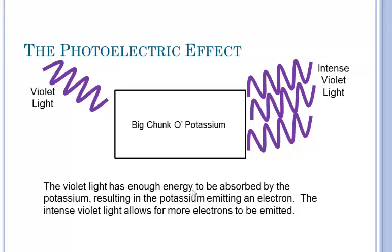To review: violet light has enough energy to be absorbed, resulting in potassium emitting electrons. Intense light allows for more electrons to be emitted because there are more photons hitting it.